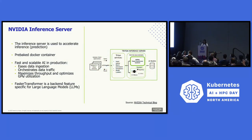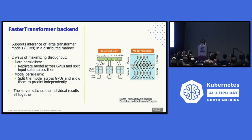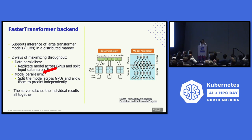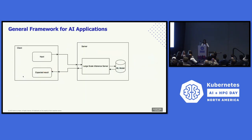FarPilot uses an NVIDIA inference server at the backend to accelerate inference, which is required for ML at scale. That in turn uses a custom faster transformer backend specific for LLMs, to provide inference in a distributed manner using model parallelism — where it basically splits the entire model into multiple different parts, predicts independently, and stitches the output together at the end.